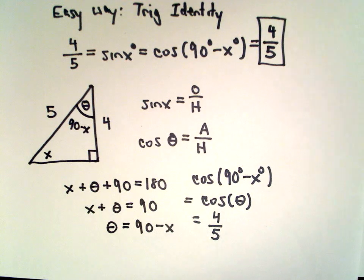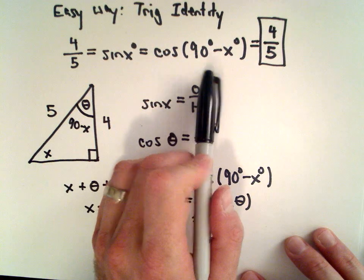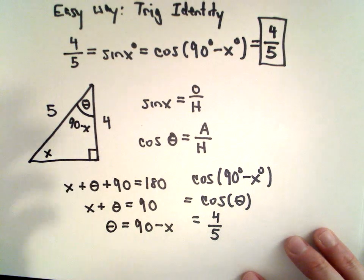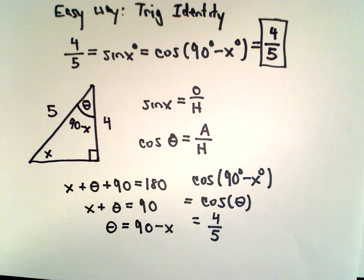I could imagine a lot of people wouldn't know this identity, but knowing this right triangle relationship is certainly very useful. It would be something I would want to be comfortable with when taking the SAT or the ACT.